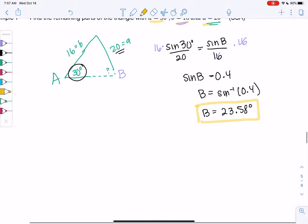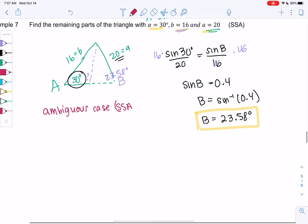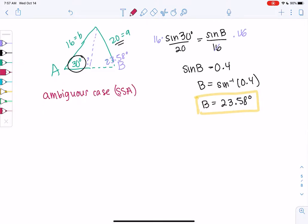All right, so we found this angle. And now the question is, is there another angle that would also make this work? We only do this for the ambiguous case. So we're in the ambiguous case. Only when you have SSA. Do not do this for any other situation, because it doesn't happen.